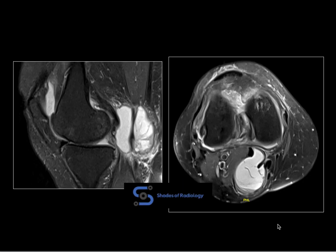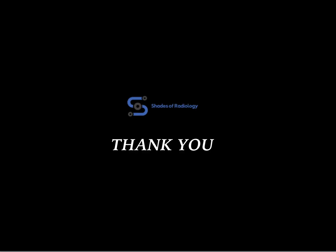Classic one — a simple cyst from the popliteal fossa with classic appearance of neck and body, located between the medial head of gastrocnemius and semimembranosus tendons: classic Baker's cyst. It has a thin communication with the knee joint. Sometimes it may not have a communication, in which case we call it gastrocnemius-semimembranosus bursitis. Thank you all.